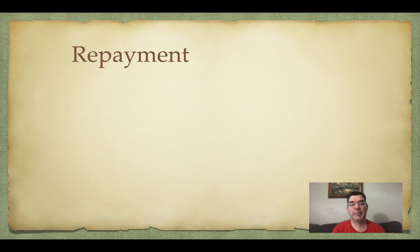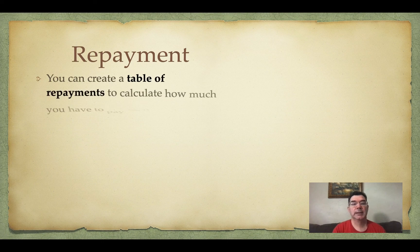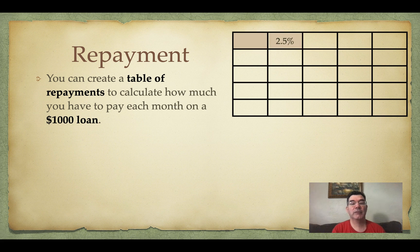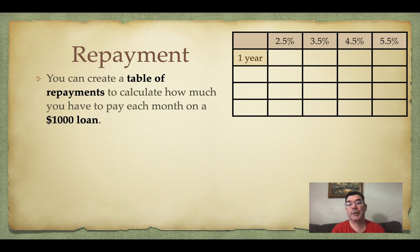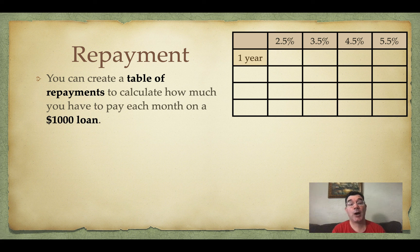Here's how we talk about repayment. We can create a table of repayments by picking out different interest rates — I've chosen 2.5%, 3.5%, 4.5%, and 5.5%. You can figure out how much you'd have to pay every month depending on how long you were borrowing that money.